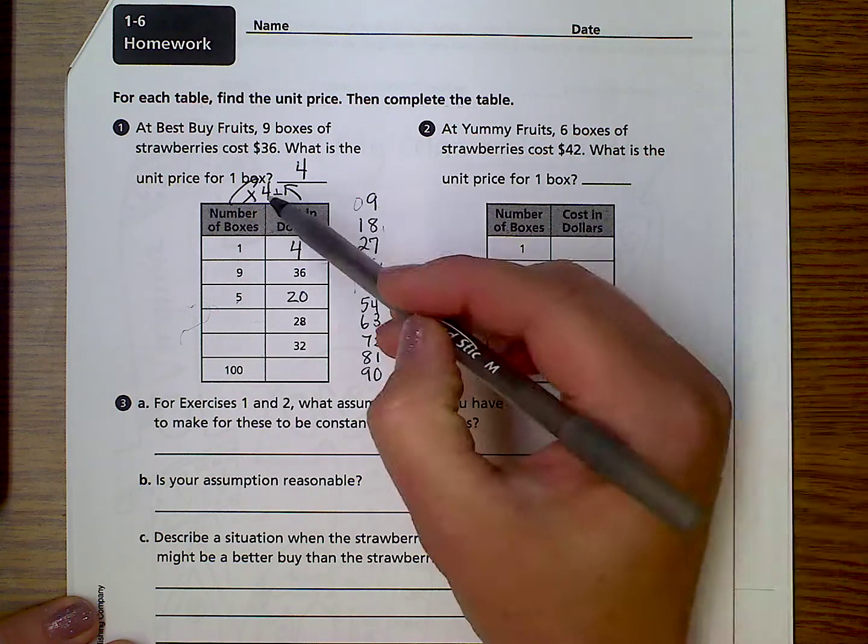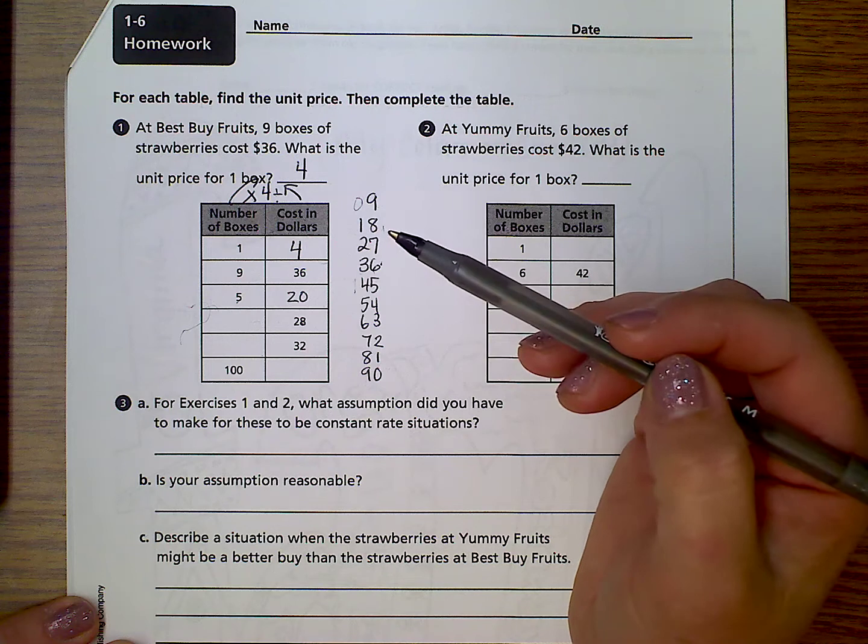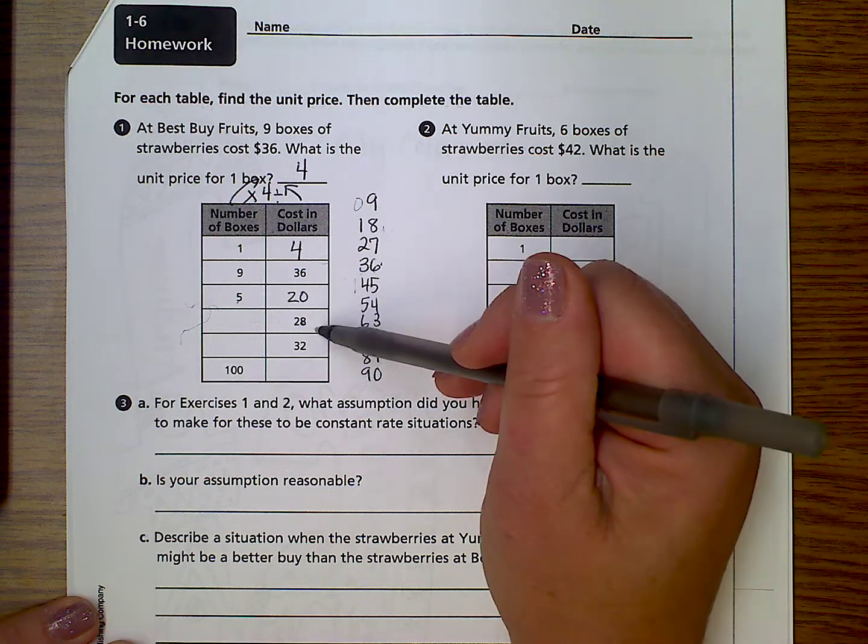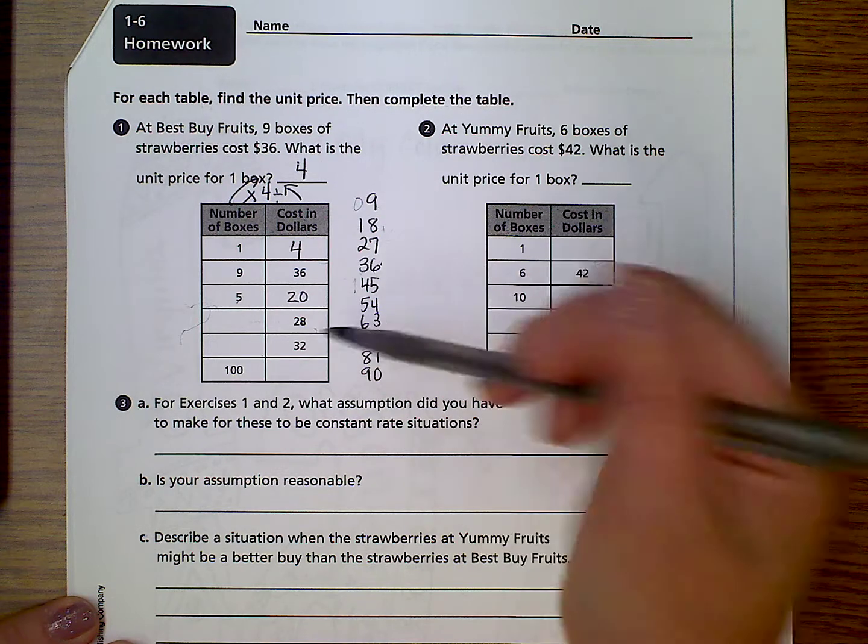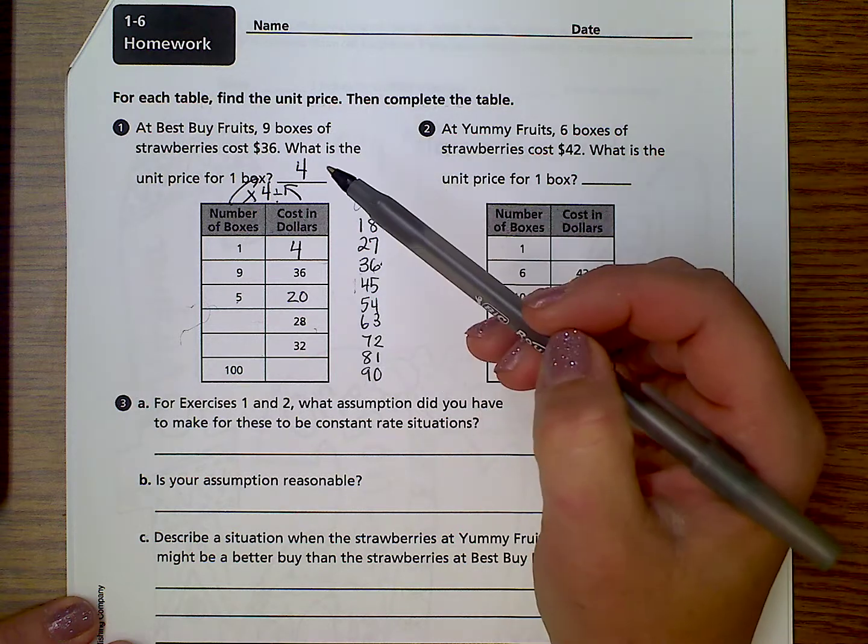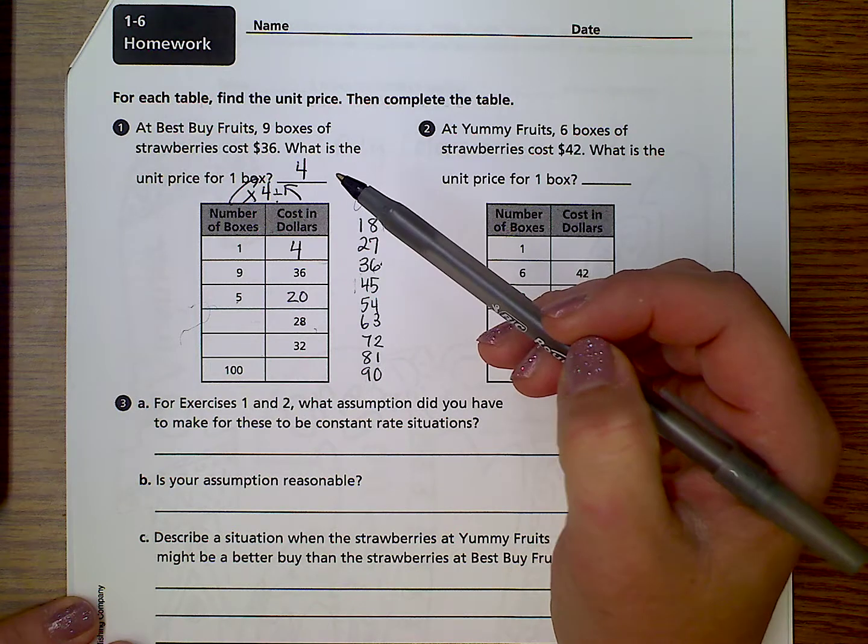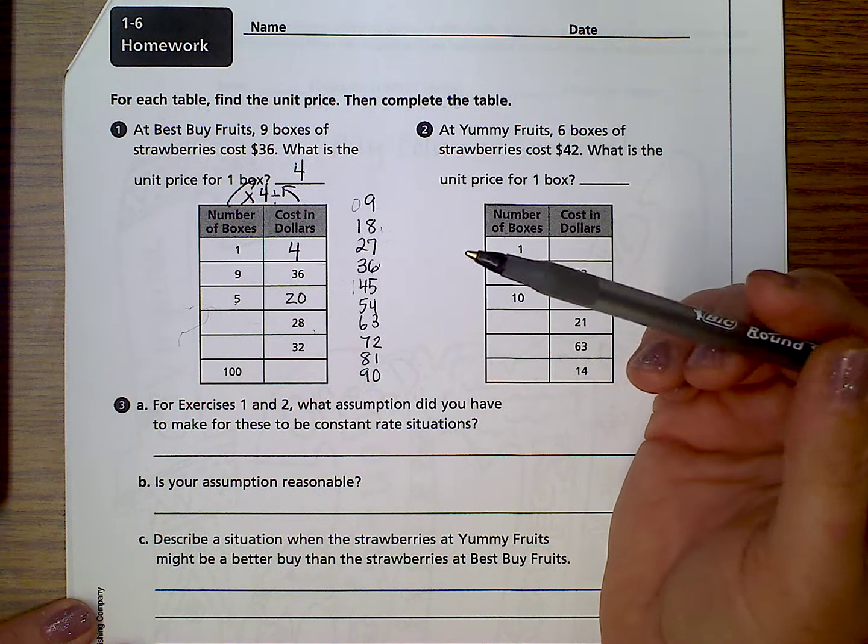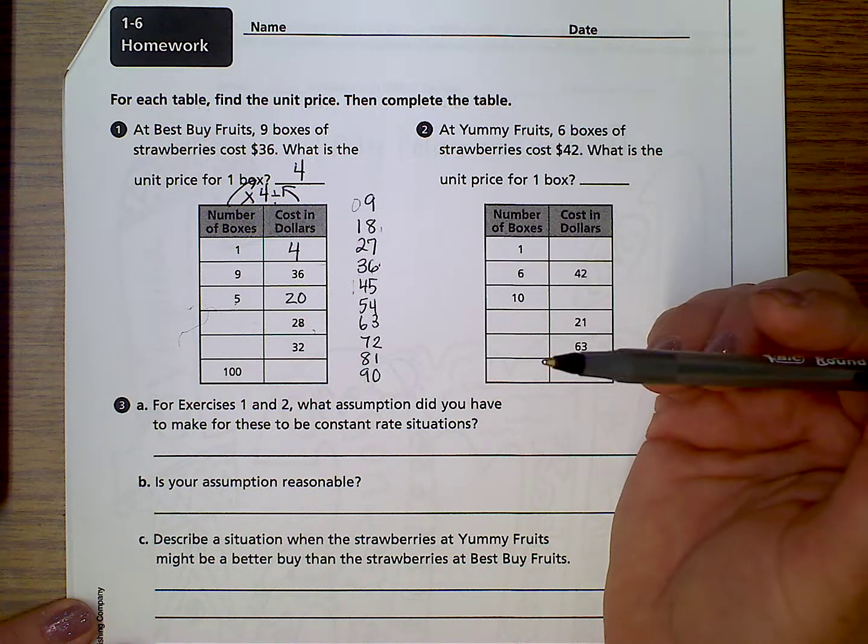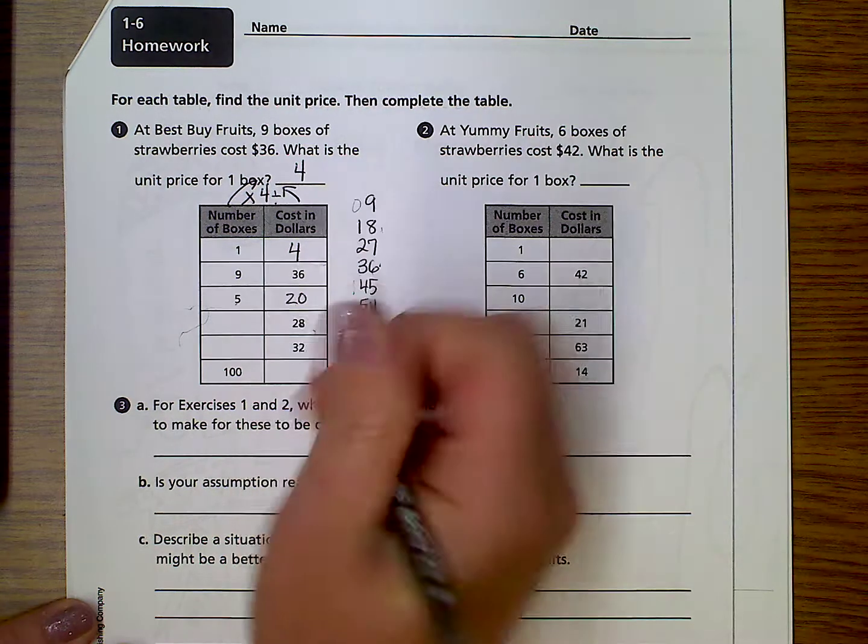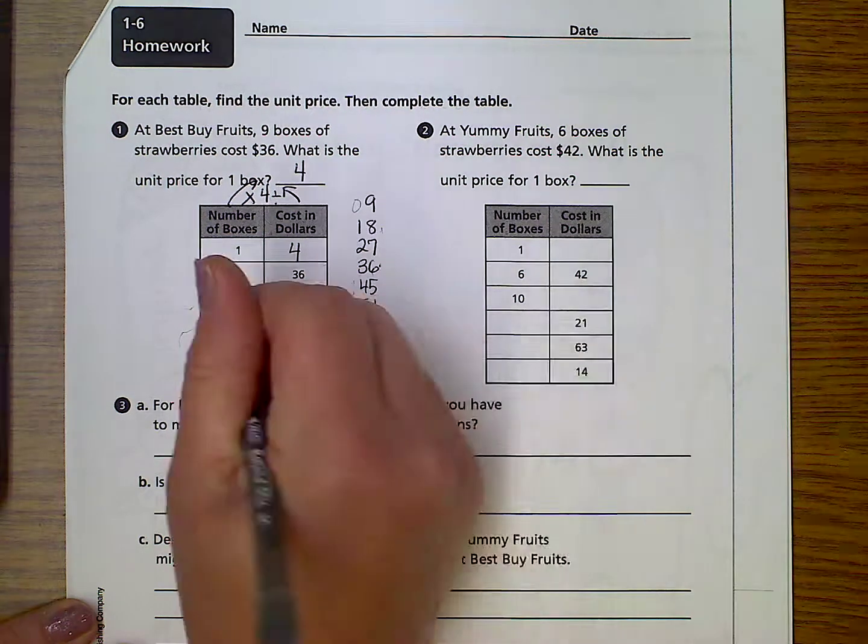And anything going that way is divided by 4. So 5 times 4 is 20. 28 goes into 4. Hmm. I don't think that's supposed to be there. Oh, wait. Hold on a second. 9 boxes of strawberries cost $36. What is the unit price for one box?